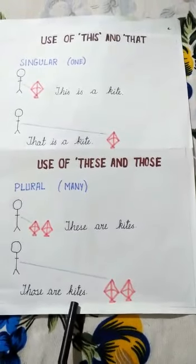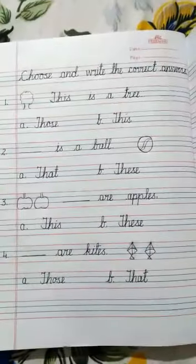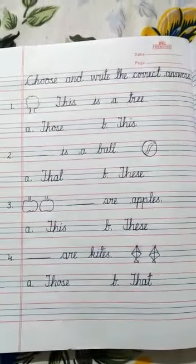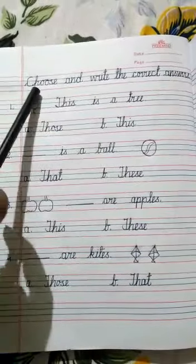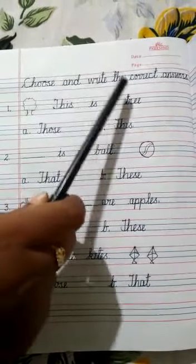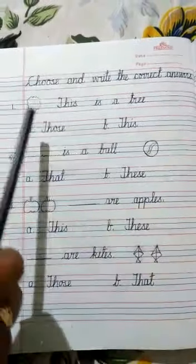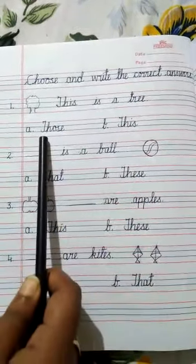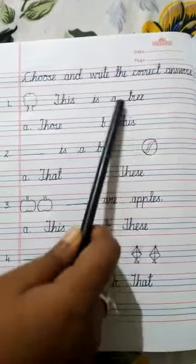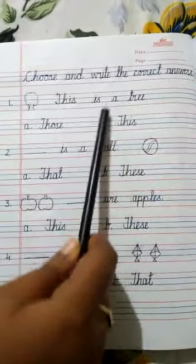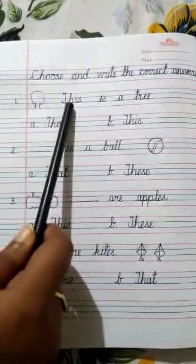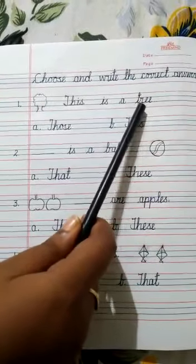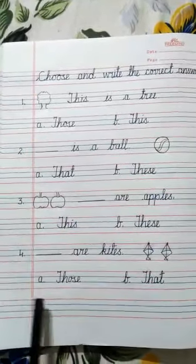I hope you understood, children. Now do this in your English language copy. Choose and write the correct answers. Dash is a tree — now choose 'those' or 'this'. So what will be our answer? This. So write in the blank: This is a tree. In the same way, complete the rest. Thank you.